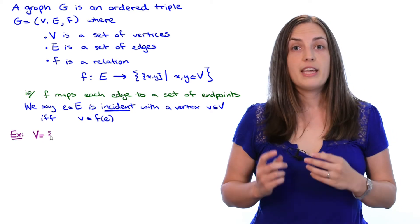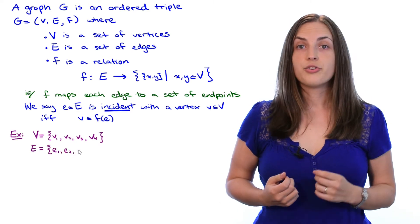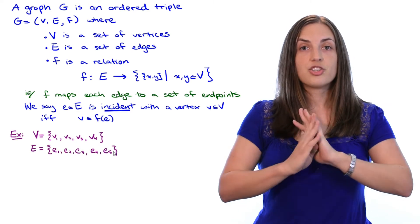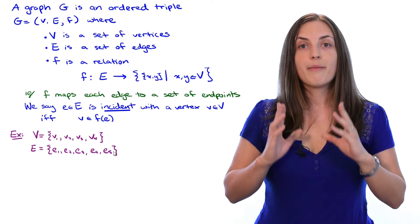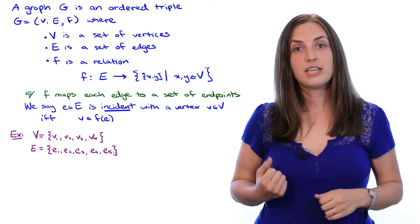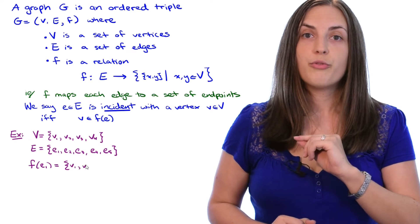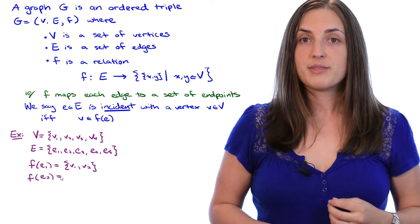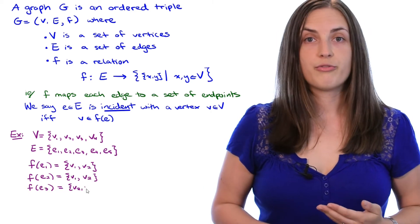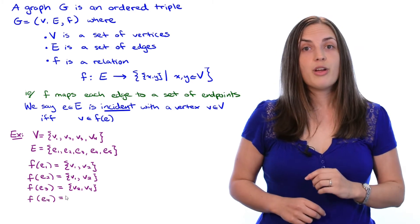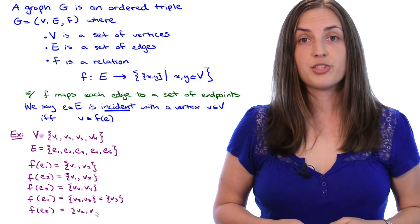In our example, we'll take V to be the set V1, V2, V3, and V4, and E to be E1, E2, E3, E4, E5. Notice that I just have a set of E's. I don't know yet where they are in the graph. Now, we have a mapping F, and we have to explain how the mapping F maps each edge to some set of endpoints. So F maps the first edge to V1 and V2, and F maps the second edge to V1 and V2. Next, F maps the third edge to V2 and V4. The fourth edge gets mapped to V3, V3, which is just V3. And finally, the fifth edge gets mapped to V2, V3.